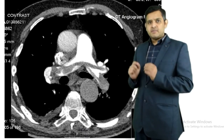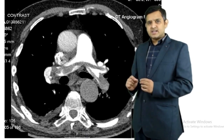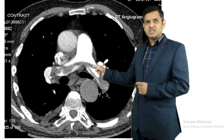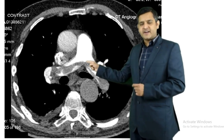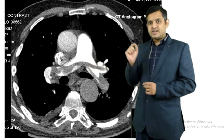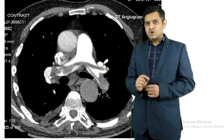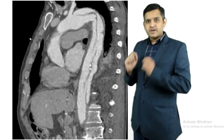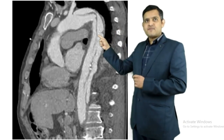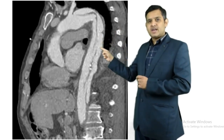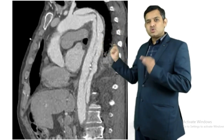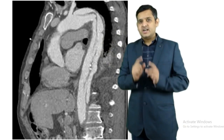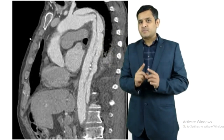If you see pulmonary arteries filling with contrast but notice a filling defect in the pulmonary artery, you are dealing with a case of pulmonary embolism. Whereas, if you see a flap in the aorta, you are dealing with a case of aortic dissection in acute chest pain.